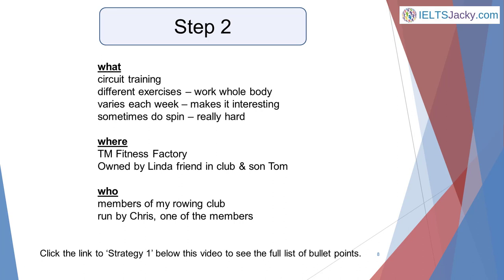There isn't room on these slides for me to do this in full for this cue card, but here are the first three. To see the full list of bullet points, go to the Strategy One page on my website — the link is in the notes below this video. Under 'What' we have: Circuit Training, Different Exercises, Work Whole Body, Varies Each Week, Makes It Interesting. Under 'Where' we have: TM Fitness Factory, Owned by Linda, friend in club, and son Tom. And under 'Who': Members of my rowing club, Run by Chris, one of the members.